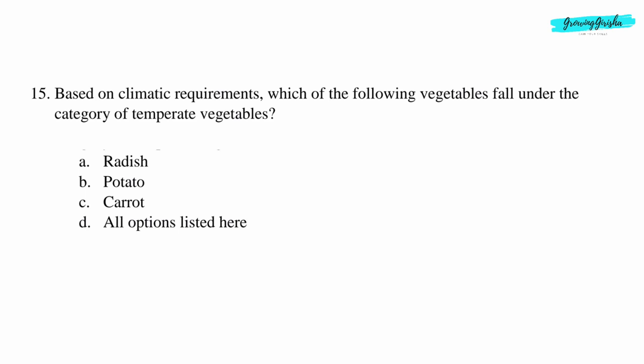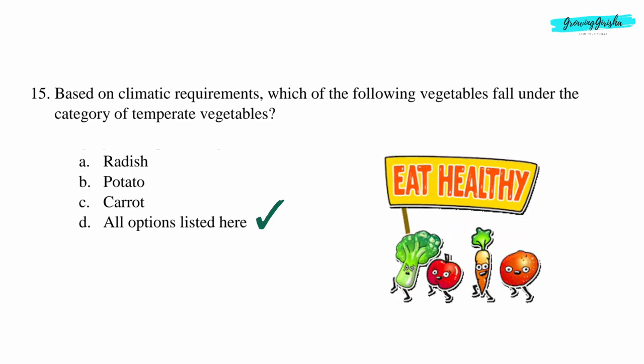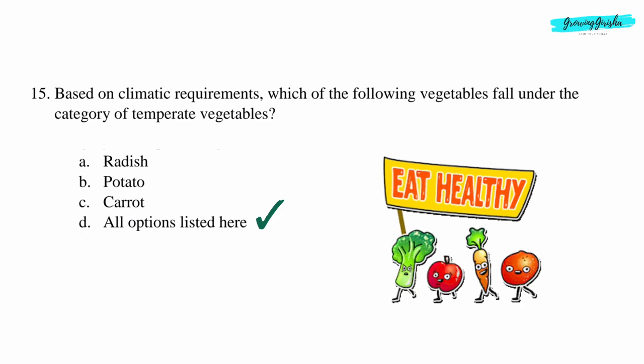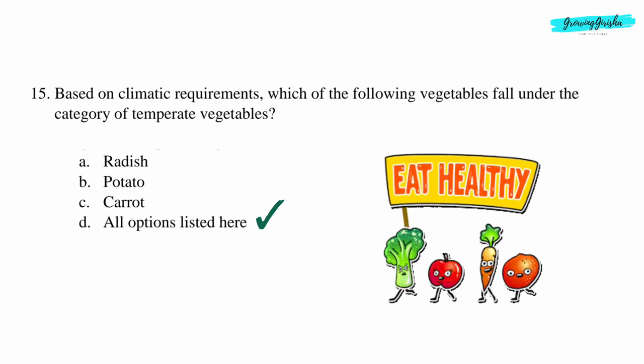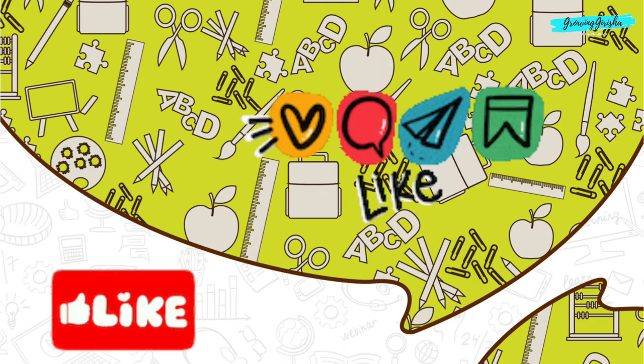Question 15: Based on climatic requirements, which of the following vegetables fall under the category of temperate vegetables? Option D: All options listed fall under the category of temperate vegetables based on their climatic requirements.